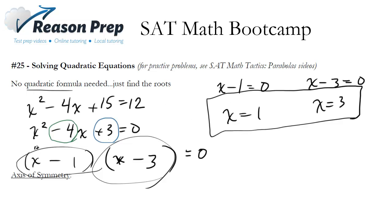Notice also, whenever you unfoil, you can refoil and make sure that you did it right. So x times x is x squared, x times negative 3 is negative 3x, negative 1 times x is minus x, so negative 3x and minus x is negative 4x. And then negative 1 times negative 3 is positive 3.